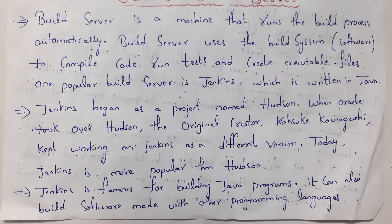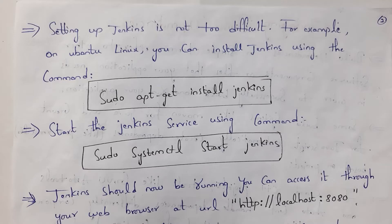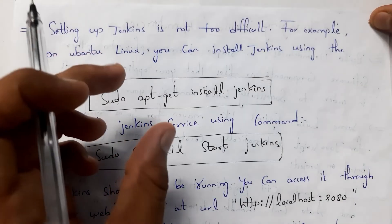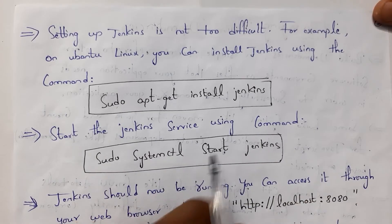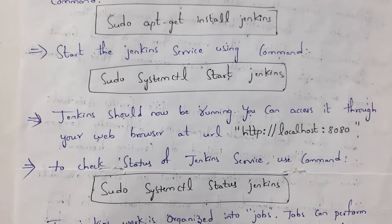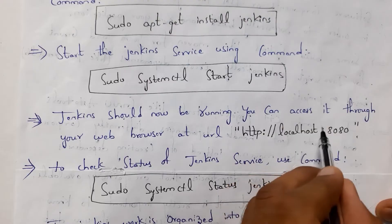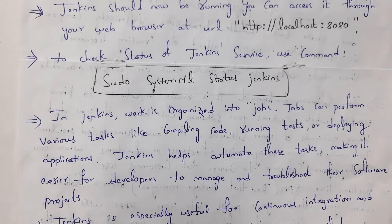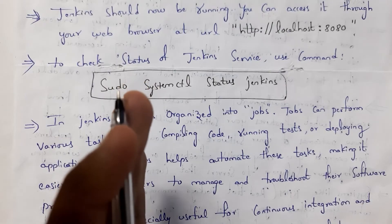Jenkins is famous for building Java projects, but you can also build software made with other programming languages. Installing Jenkins on your system is very easy. For example, on Ubuntu you run: 'sudo apt-get install jenkins'. To start the Jenkins service, run: 'sudo systemctl start jenkins'. To access Jenkins, open your web browser and go to 'http://localhost:8080'. To check the status of Jenkins — whether it is active or not — run: 'sudo systemctl status jenkins'.